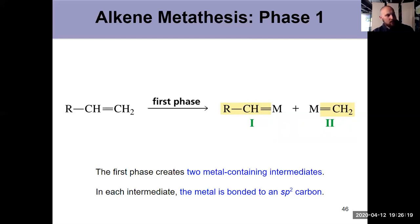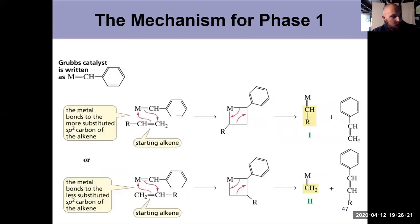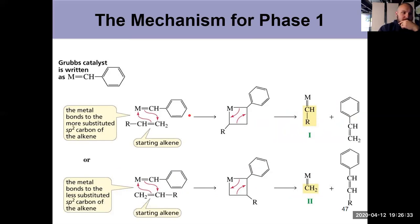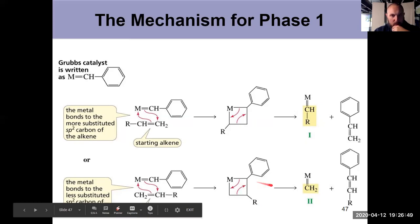How does that happen? Showing the Grubbs catalyst, this guy up here, we start by doing a 2+2 cycloaddition, which we would have learned in Chapter 8. We've seen those cycloadditions a couple of times. And that gives us two different intermediates here, two different metallocyclobutane intermediates here, depending on where that metal in the R group are. And then we have a ring-opening reaction to form two new intermediates, one and two.